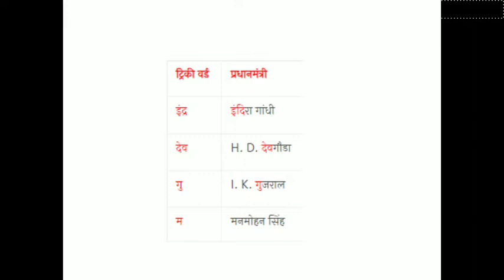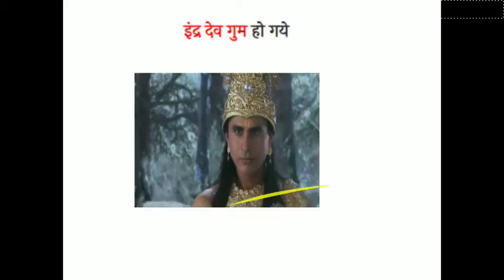HD देवे गोडा, I.K. गुजराल, और मनमोहन सिंग। तो सबसे पहले हम keywords fetch कर लेंगे — इंद्रा गांधी से 'इंद्र', HD गोडा से 'देव', I.K. गुजराल से 'गुज', और मनमोहन सिंग से 'म'। तो ये mnemonic हम बना लेंगे: 'इंद्र देव गुम हो गए'।